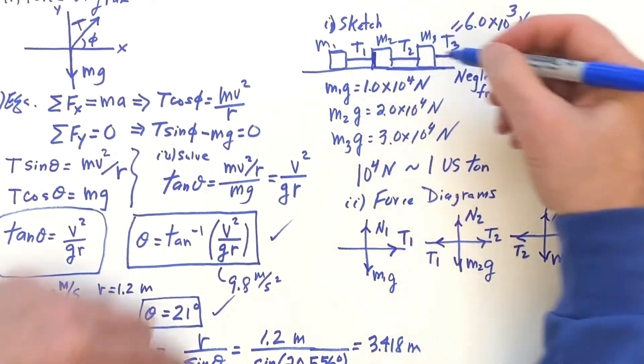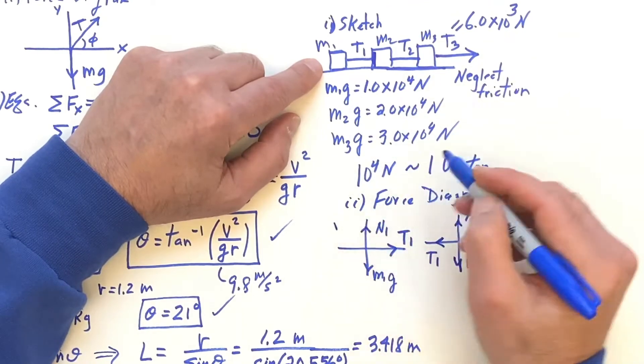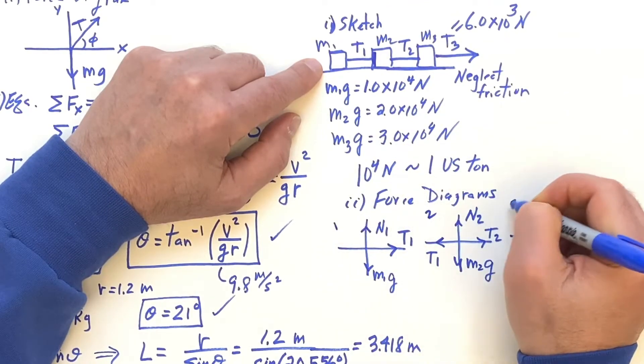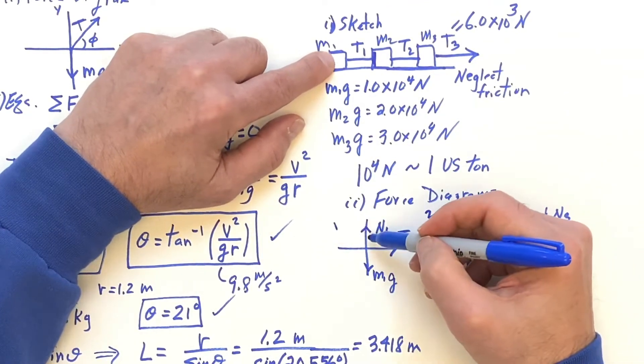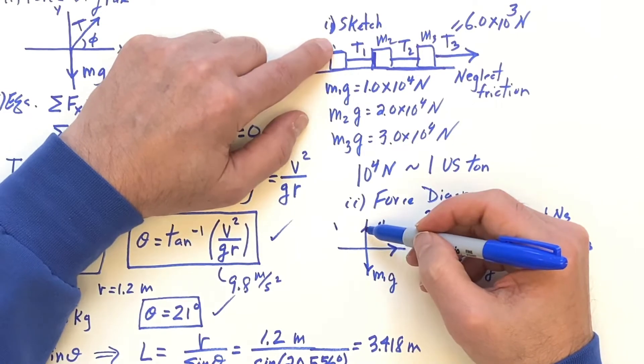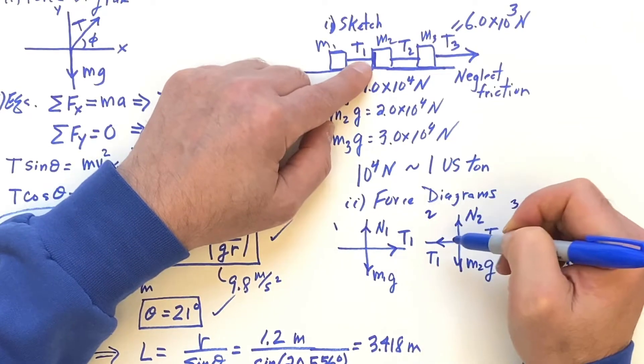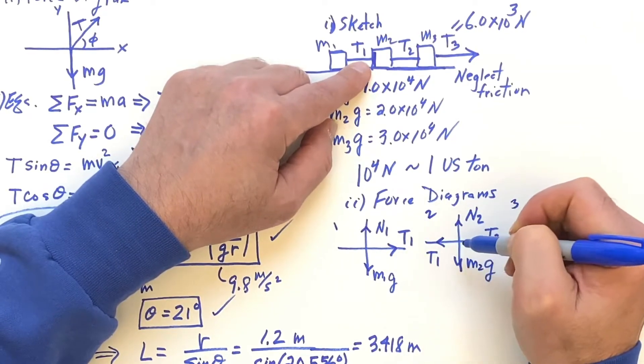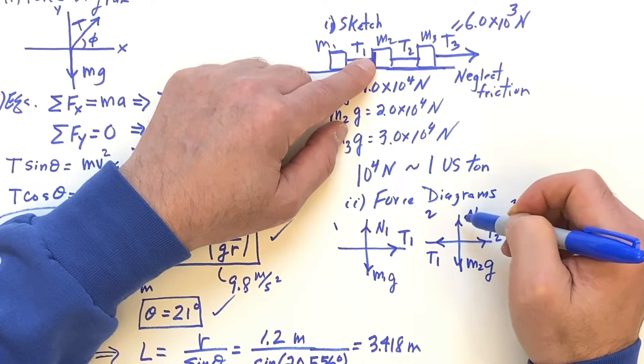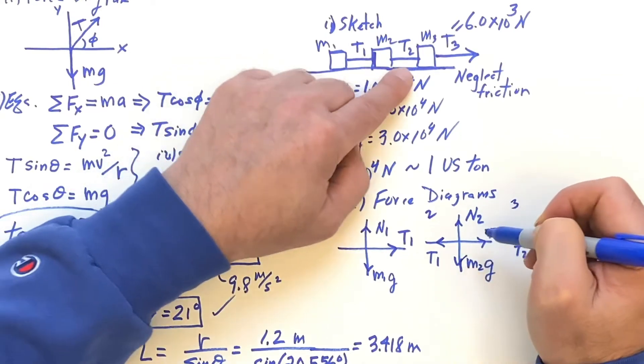So you can refer to this diagram. This is the first mass, the second mass, and the third mass. So you have M1G down, N1 up normal, and T1 going to the right. Here, for mass 2, T1 is going to be pulling back, equal and opposite. You have N2 normal and M2G going down.